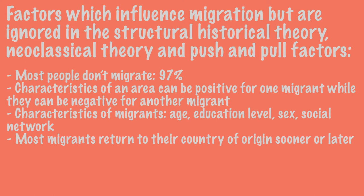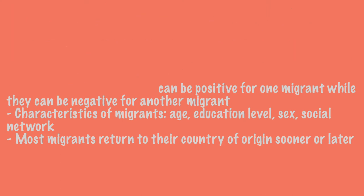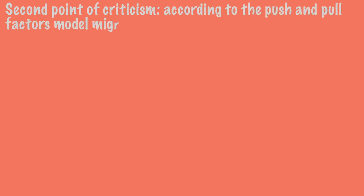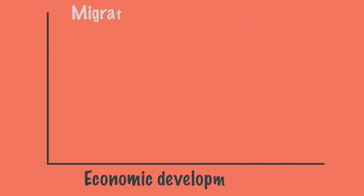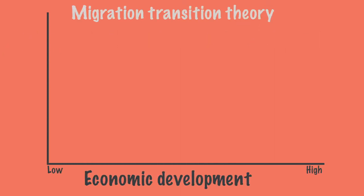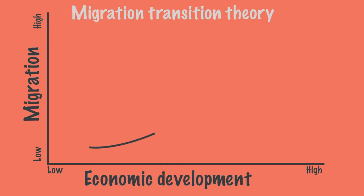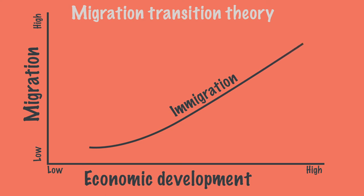A second point of criticism is that according to the push and pull factors model, migration will decrease with economic development, but research has shown that this will increase. According to migration transition theories, we can display this in a graph. The horizontal axis shows economic development, while the vertical axis shows the proportion of migrants. Immigration, as expected according to the push and pull factors model, will increase with the economic development of a country, because the country becomes more attractive.